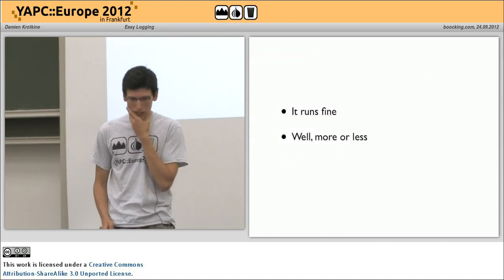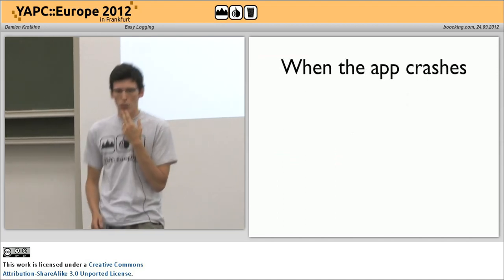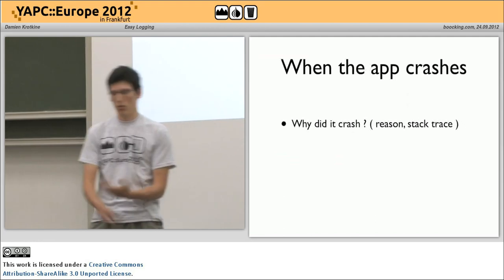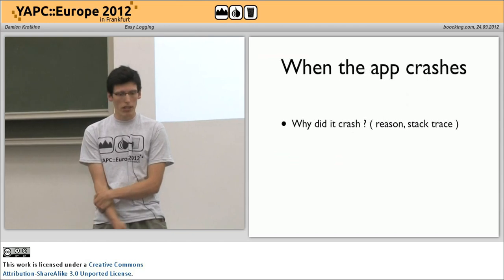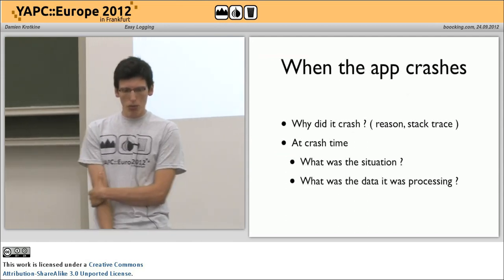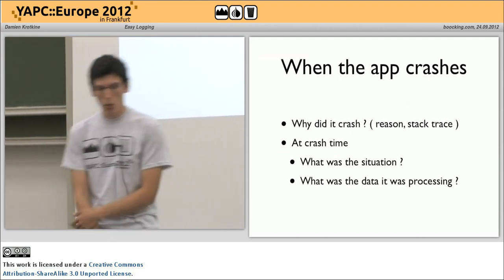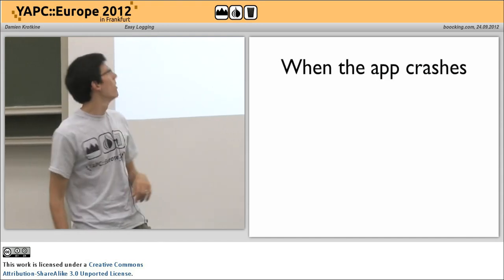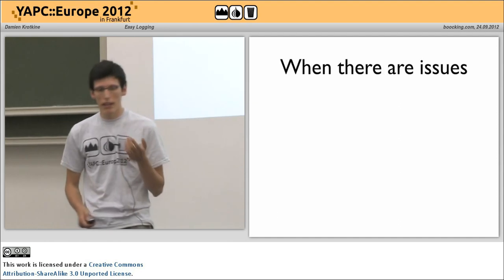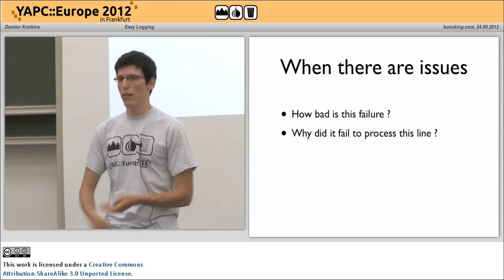It runs fine except when it doesn't, and of course I'd like to know what's going on. First I'd like to know what's up when it crashes — why did it crash, what's the error message, what's the stack trace, where are we when it crashes. But more importantly, what's the situation when it crashes? What data was it processing? That contextual information is just as important as why it crashed.